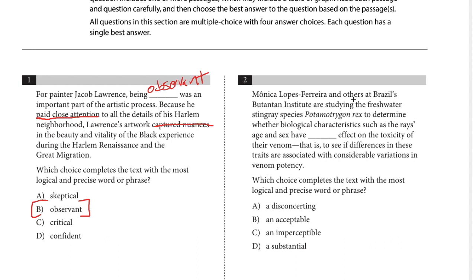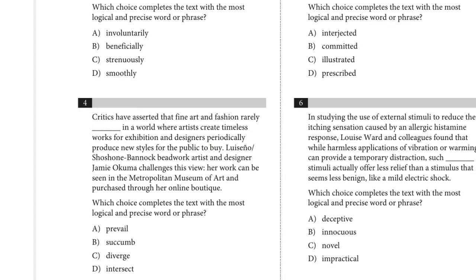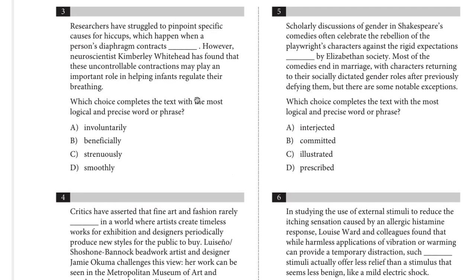Number two: researchers are studying the freshwater stingray species to determine whether biological characteristics such as the ray's age and sex have a blank effect on the toxicity of their venom. The clue follows: to see if differences in these traits are associated with considerable variations in venom potency — so we want a large or substantial effect. Both the single dash and the colon act as similar clues, signaling an explanation of the material right before them.